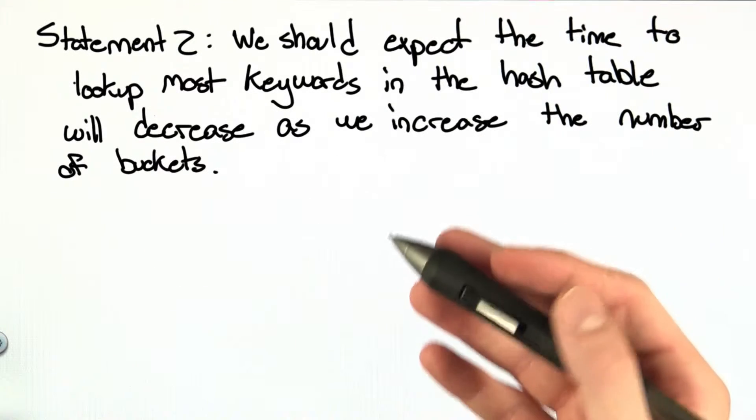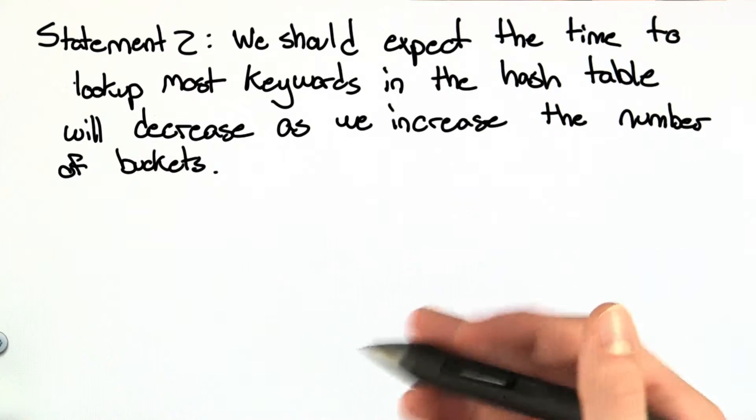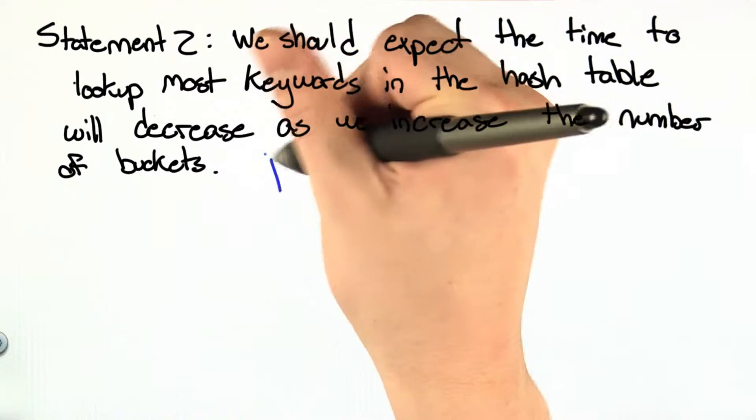Statement 2 says we should expect the time to look up most keywords in the hash table will decrease as we increase the number of buckets. And with a good hash function, this is true.